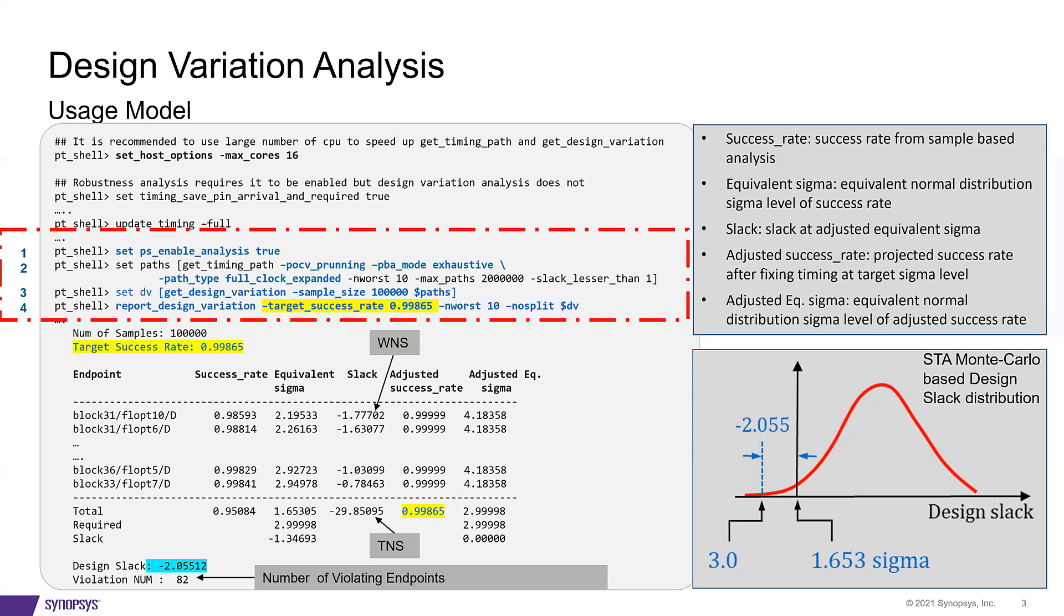Second, we create a collection of timing paths that result in loss of success rate. Using additional options, we can prune the paths that do not contribute to the success rate loss and helps improve the runtime.